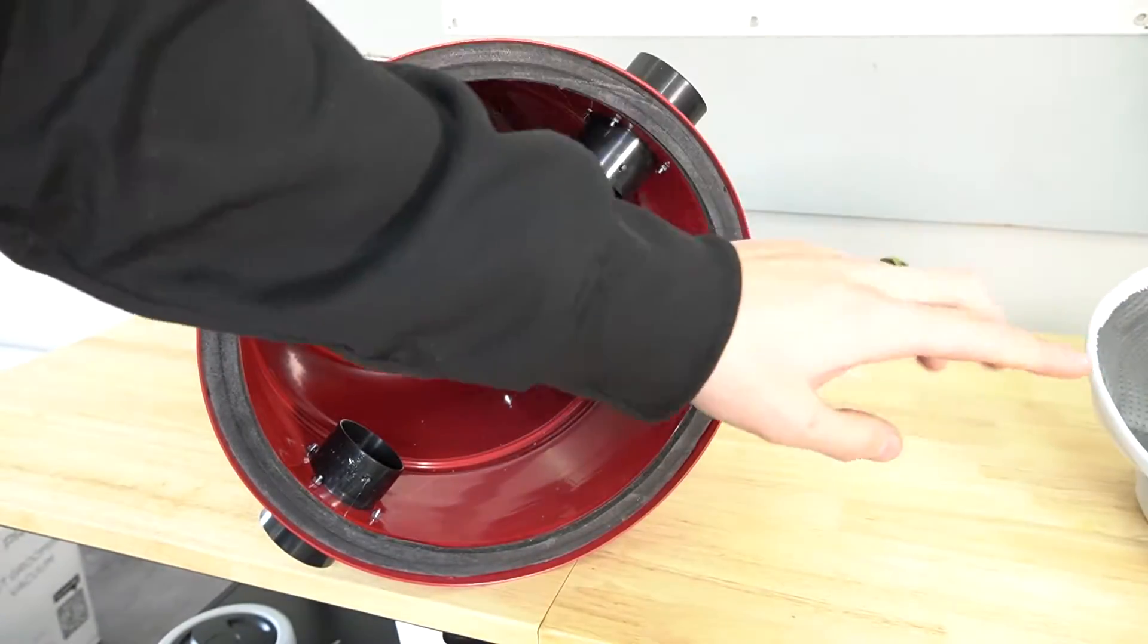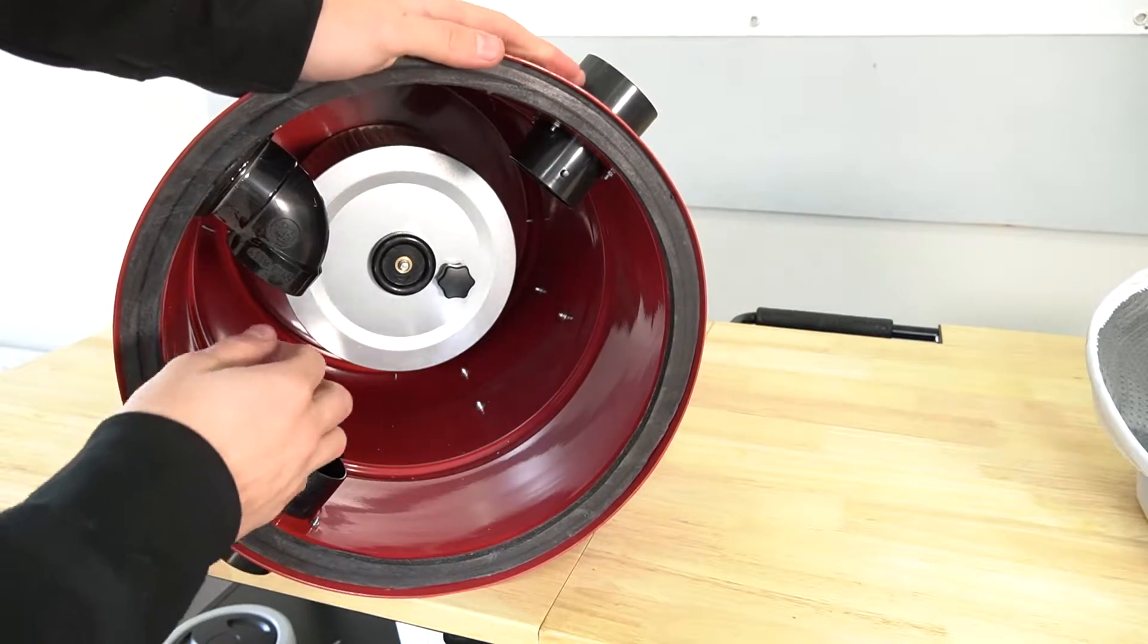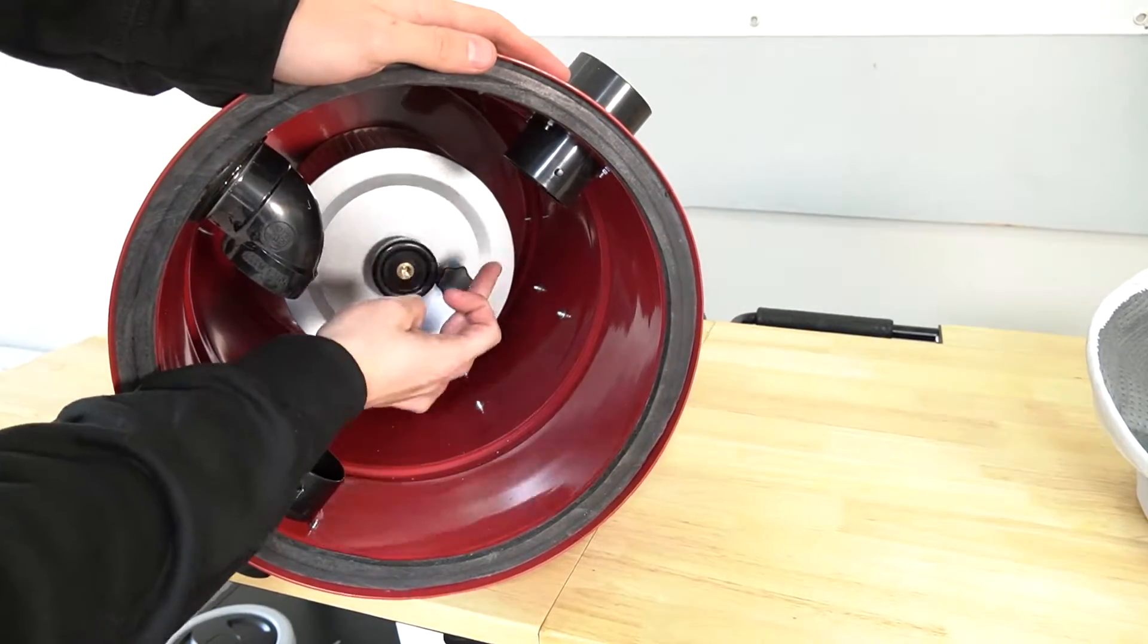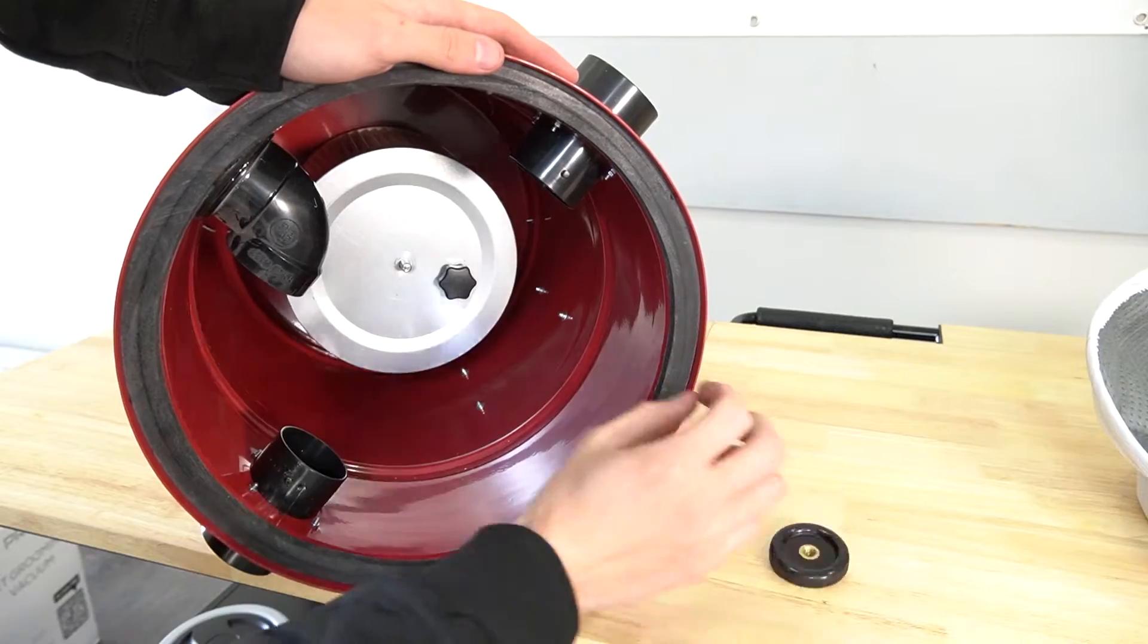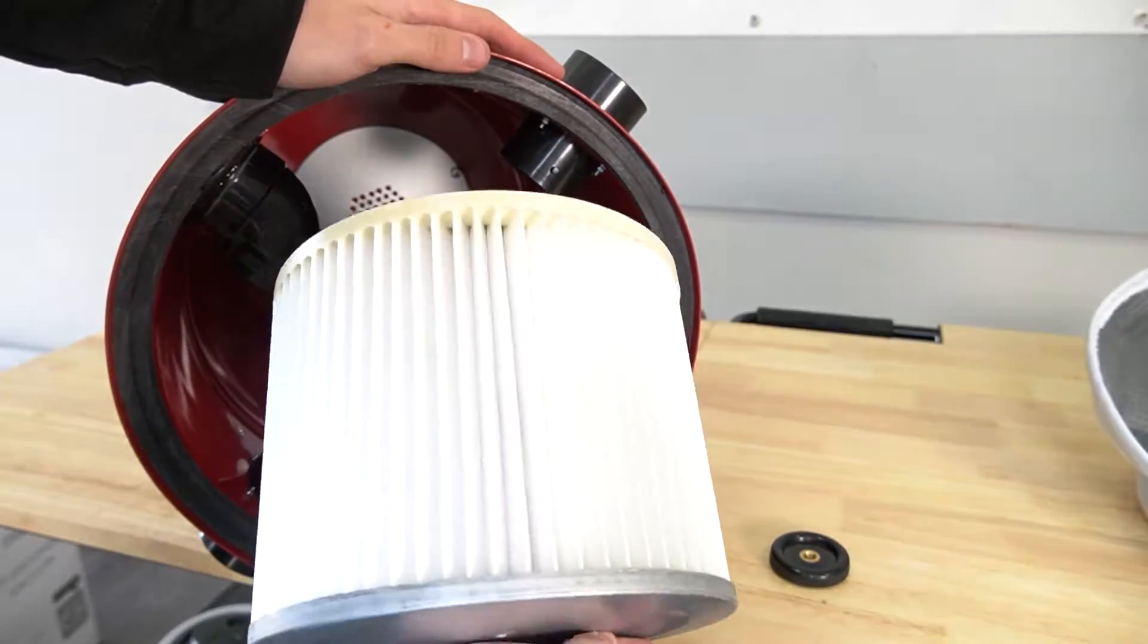That's how you remove the cloth filter. For the HEPA filter you have this screw on nut. Remove that and then you can pull the filter out.